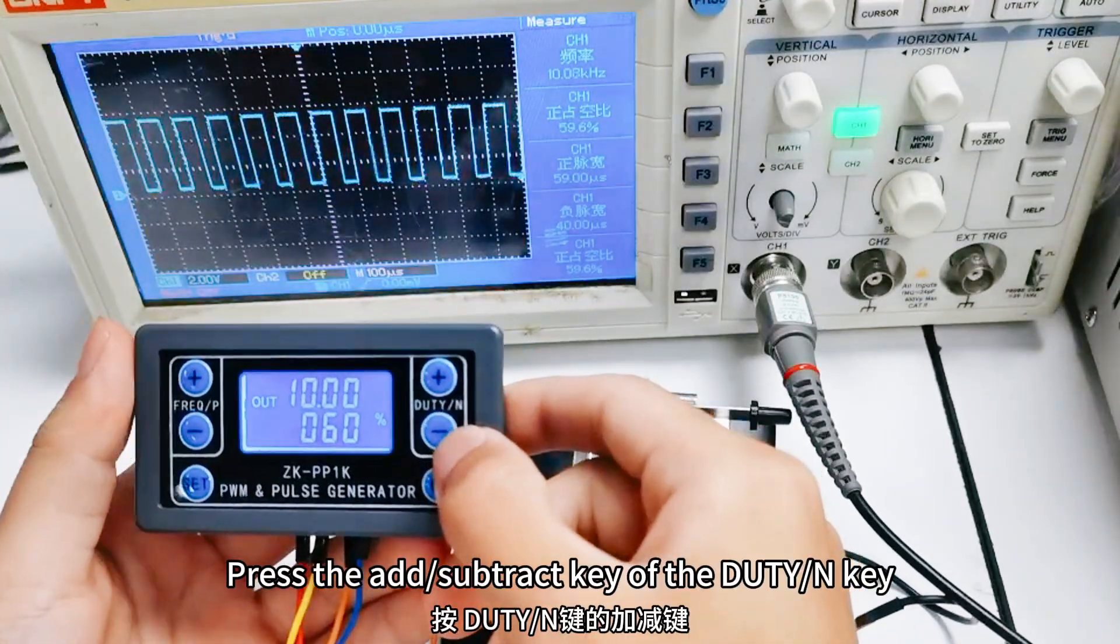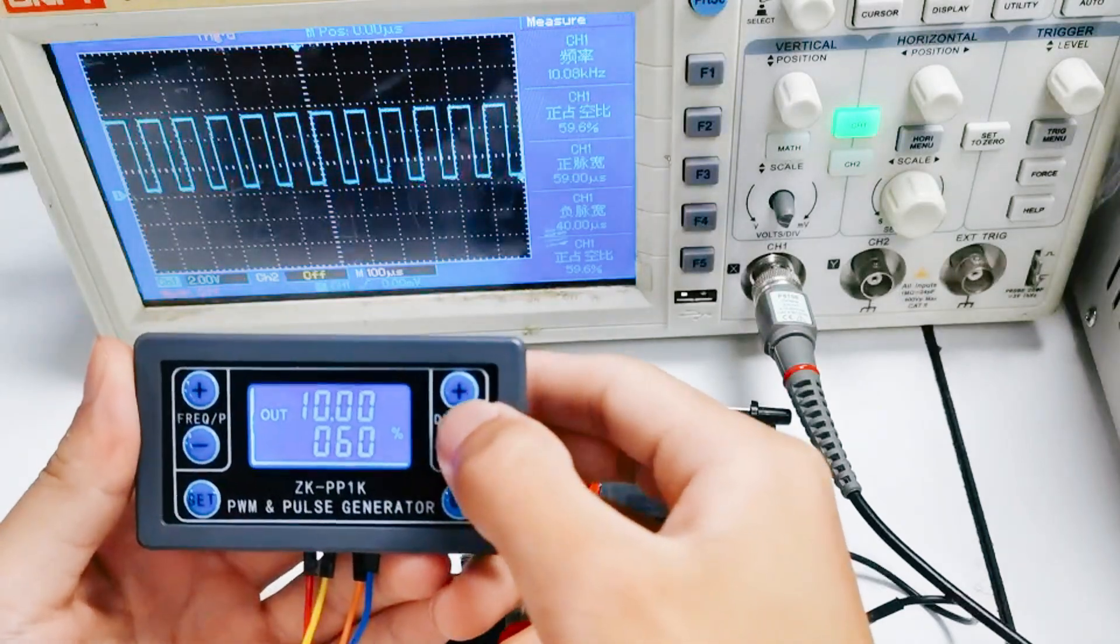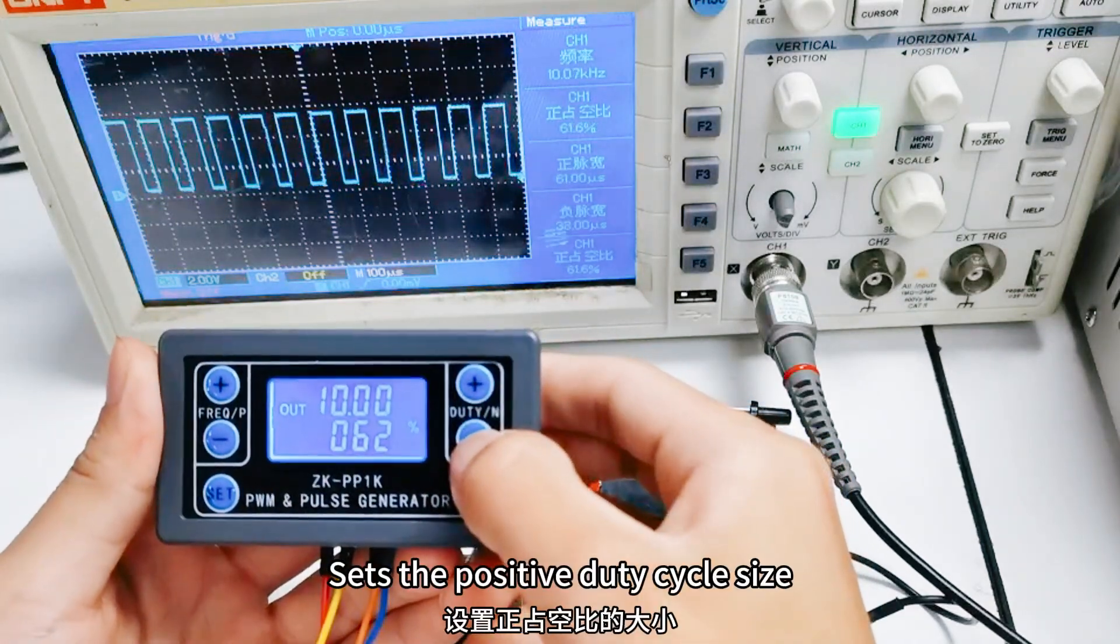Press the add, subtract key of the duty NT. Set the positive duty cycle size.